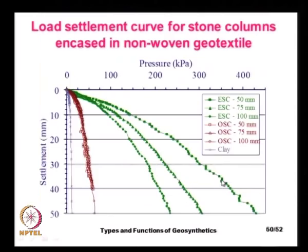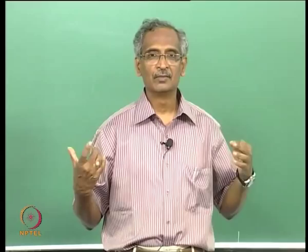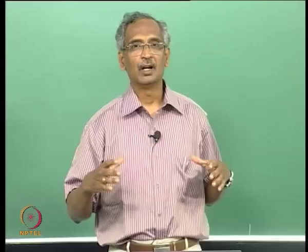As the stone column diameter increases — for example from 50 mm to 100 mm — with the same geosynthetic providing the same hoop tensile forces at a given strain, we see a reduction in stiffness and pressure capacity. To maintain performance at larger diameters, we need to use a stiffer confinement material. In a future lecture, data from tests with different stone column diameters and different geosynthetic stiffnesses will be presented.